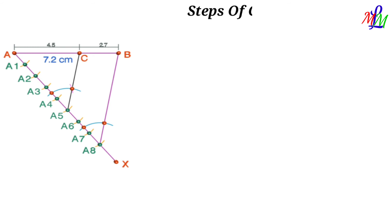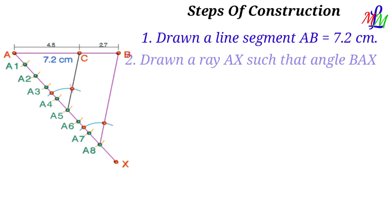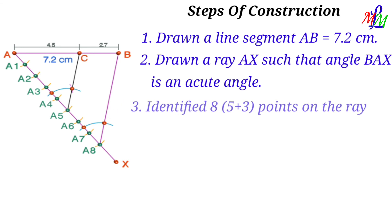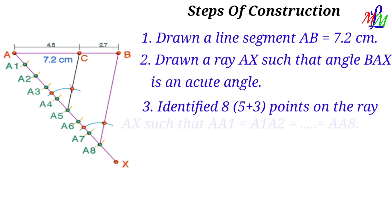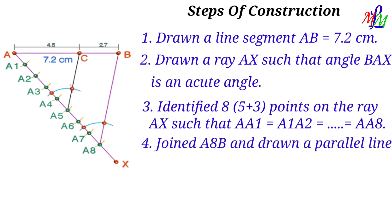Now let us write the steps of construction. Step 1: Draw a line segment AB equal to 7.2 centimeters. Step 2: Draw ray AX such that angle BAX is an acute angle. Step 3: Identify 8 equal points on ray AX such that AA1 equals A1A2 equals ... equals A7A8.